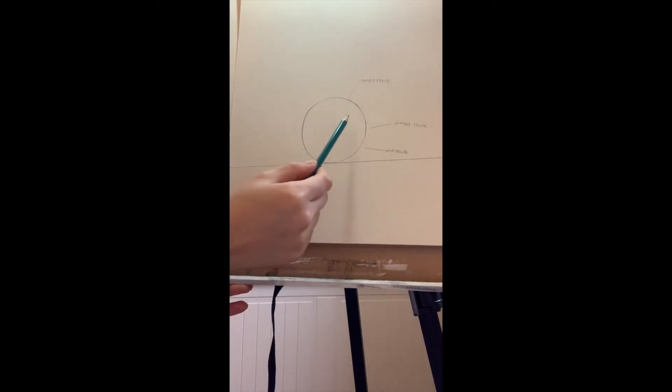I've already drawn a perfect circle. You can use anything that's circular in your house and you can go ahead and trace a perfect circle with that. Then you're going to draw a horizontal line.